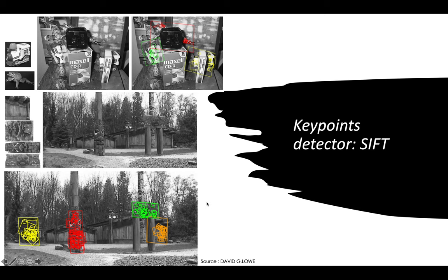Using the keypoint descriptor, we can detect objects in example pictures — even if the object is partially hidden behind another object. In a second example, the image has undergone rotation, and we can still use the keypoint detector to find the object. This shows SIFT works efficiently even in complex environments.